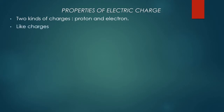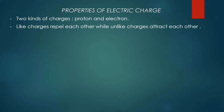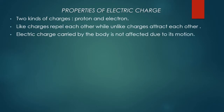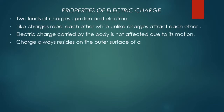The second property: like charges repel each other while unlike charges attract each other. Third: electric charge carried by a body is not affected due to its motion — if a body is carrying an electric charge while moving from place to place, the charge is not affected. Fourth: charges always reside on the outer surface of the conductor.